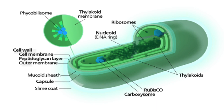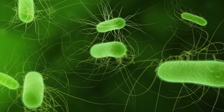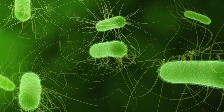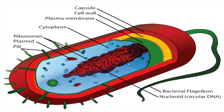Some monera use energy from the sun or from chemical reactions to make sugar. Others get nutrients from the bodies of other organisms. The monera shown here are simple cells with no separate nucleus. The material scattered through the cytoplasm does the job of the nucleus.